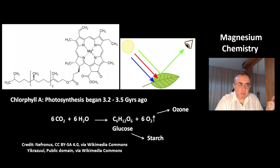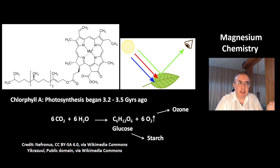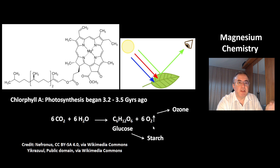This was one big step in the evolution of life. We know life is at least 3.8 billion years old. Nature invented photosynthesis about 3.2 to 3.5 billion years ago. That's this reaction: 6 CO₂ plus 6 H₂O gives glucose C₆H₁₂O₆ and oxygen as a byproduct.